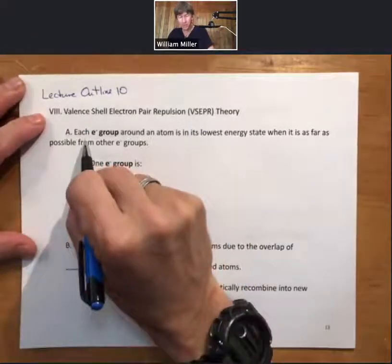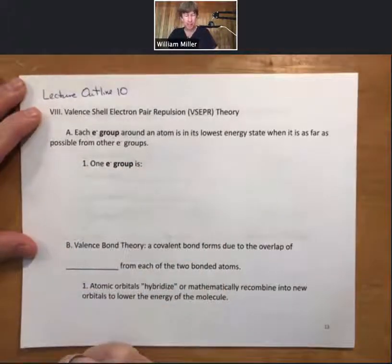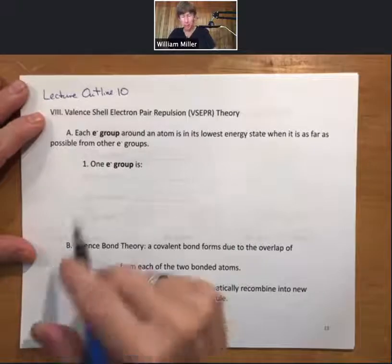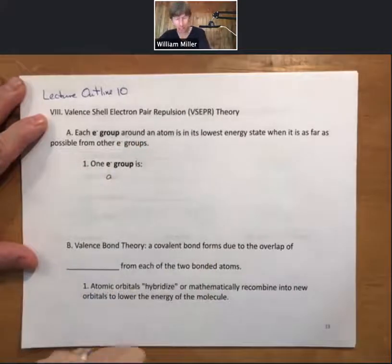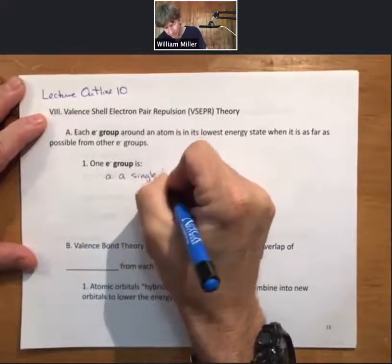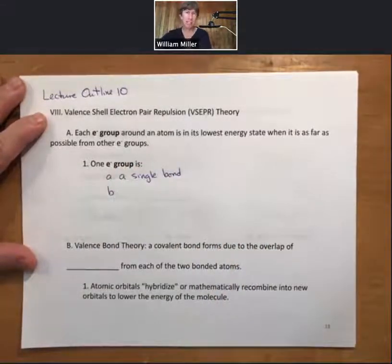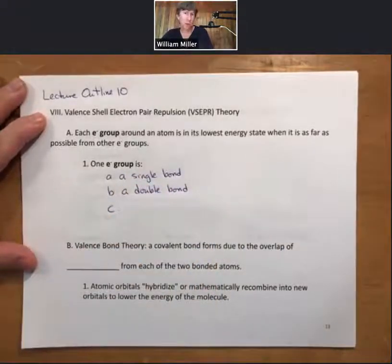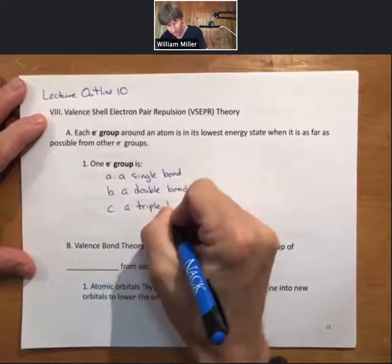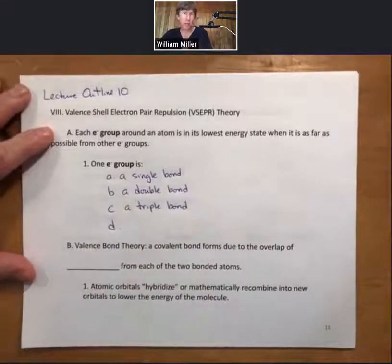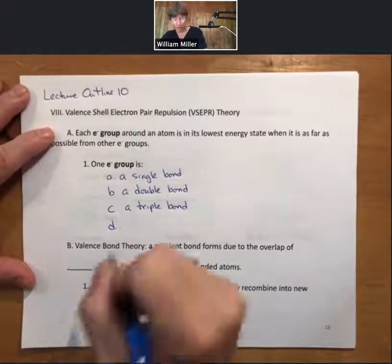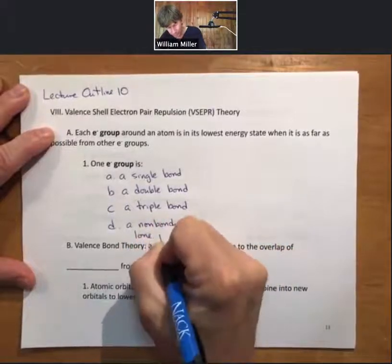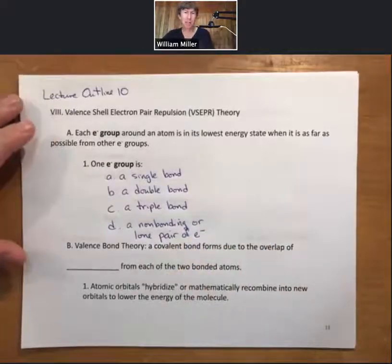The main thing in this theory is that we're going to define the term 'electron group.' Each electron group around an atom is in its lowest energy state when it is as far as possible from other electron groups. One electron group is a single bond, one electron group is a double bond, one electron group is also a triple bond, and one electron group is a non-bonding or lone pair of electrons.